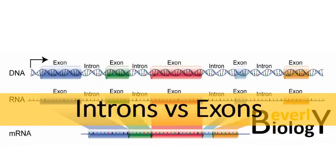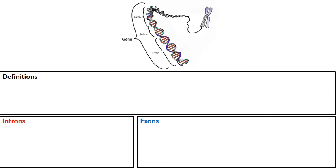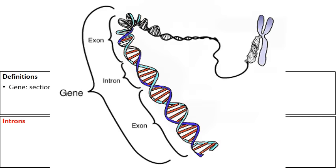In this quick video we're going to discuss the difference between introns and exons. When we go through this process we need to understand a few definitions. First, the definition of a gene. From this picture you can see a gene is a section of DNA with information to construct a protein. Zooming in, we can see that a gene is actually made from a variety of introns and exons — and that's the whole purpose of this video. Introns and exons are the DNA that make up genes.